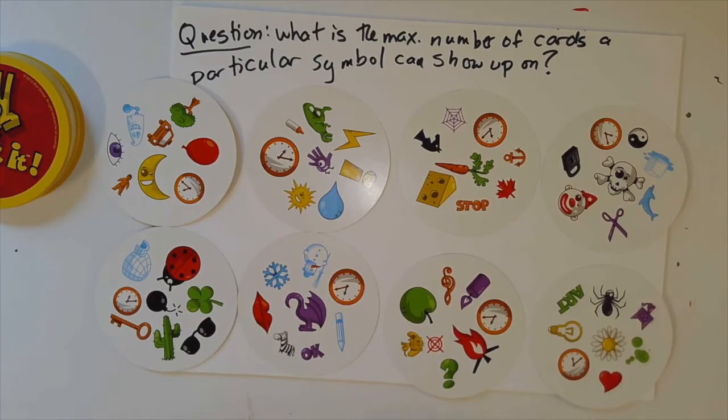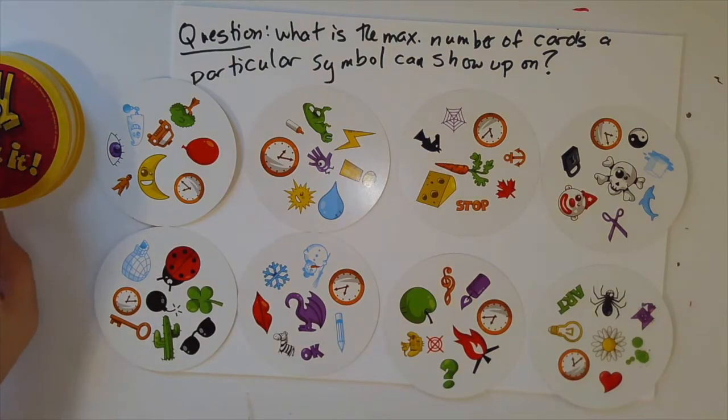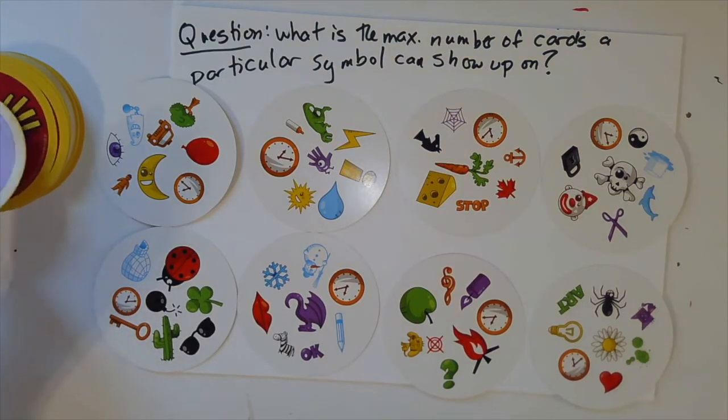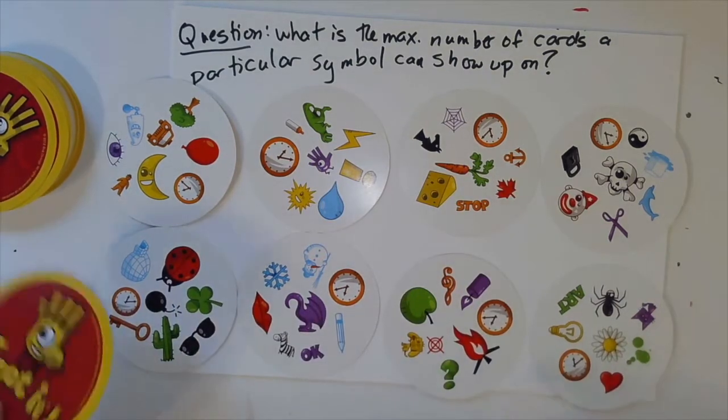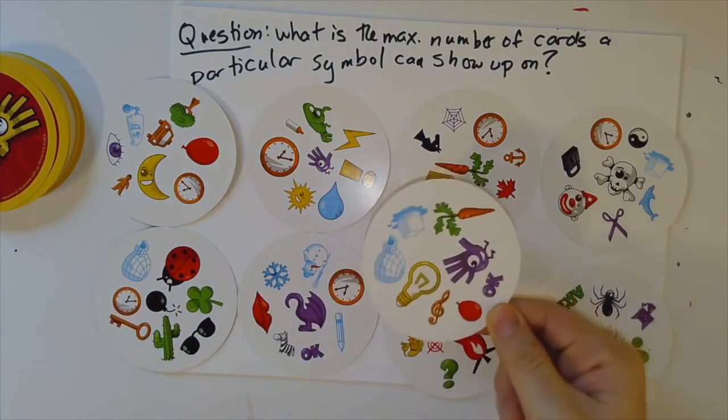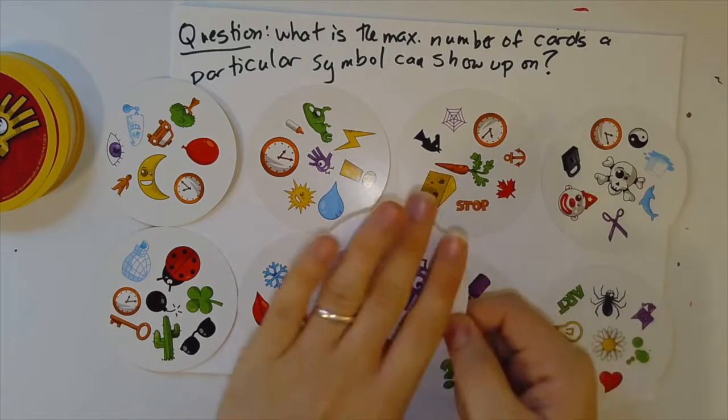And I claim there's no way that I could possibly make a ninth card with a clock on it. Why? Well, I want to think about what happens when I look at a card other than these eight. Namely, when I look at a card other than these eight, it does not have a clock on it.